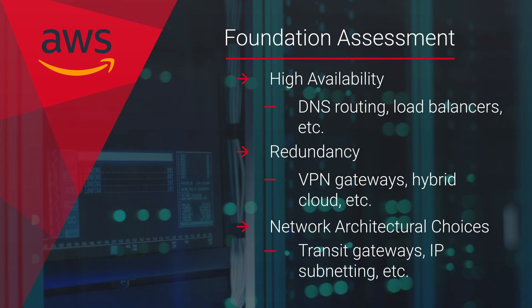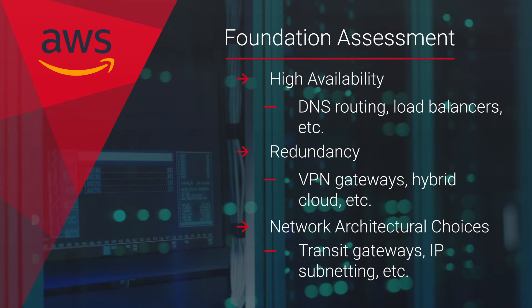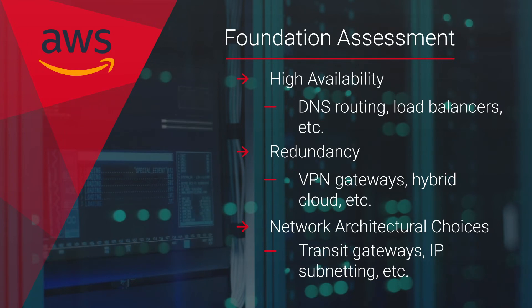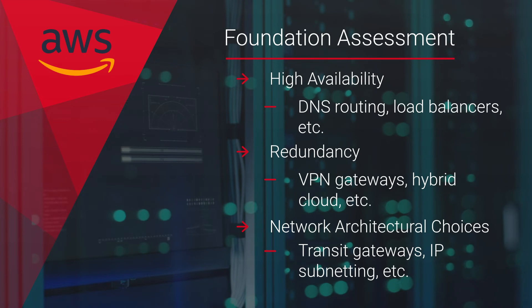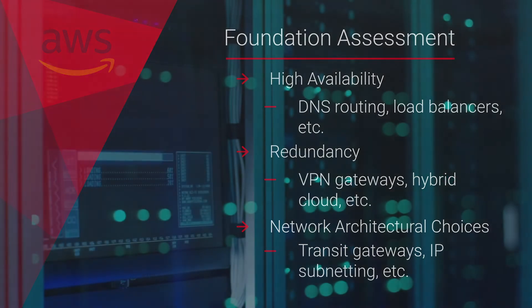We look at high availability for DNS routing, CDNs, load balancers, API gateways, etc. We also look at redundancy for VPN gateways, hybrid networking, and so on. And then also network architectural considerations such as star and mesh topology, use of transit gateways, and even something as basic as IP subnetting is reviewed.